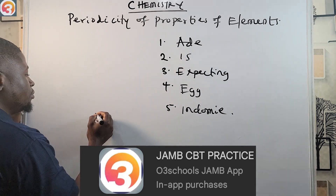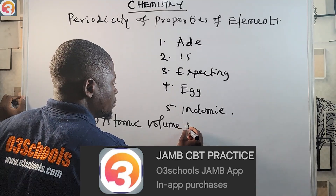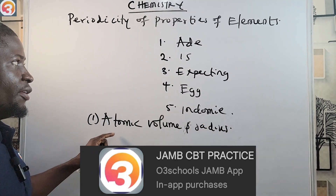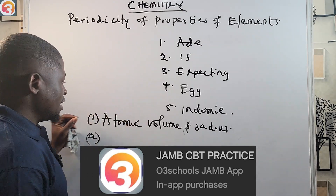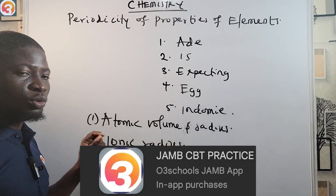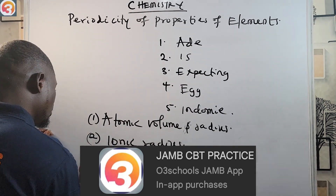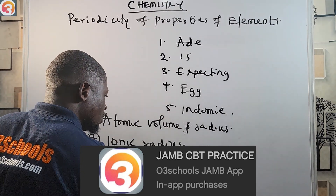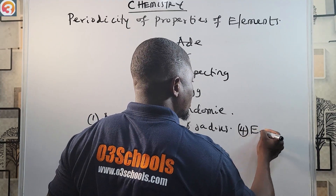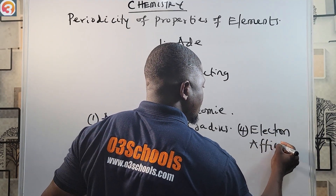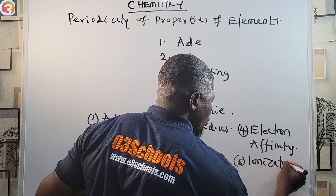So 'A' stands for number one: atomic volume and radius. 'I' is number two: ionic radius. 'E' is number three: electronegativity. 'E' is number four: electron affinity. And 'I' is number five: ionization energy.